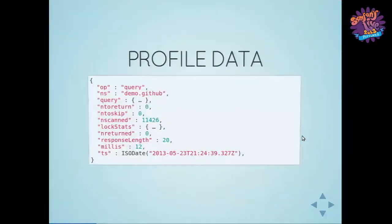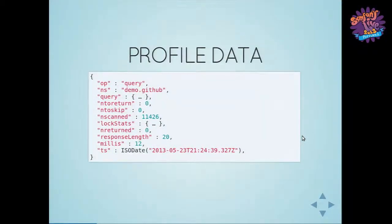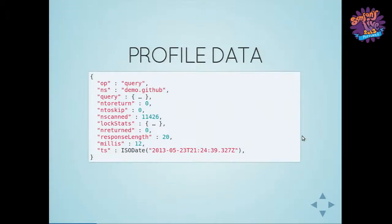An example of what the profiler data looks like: at the top we have the operation — this happens to be a query, but there might also be commands or inserts that get logged. The namespace is the database and collection name that the query happened on. There's a query blob with some Mongo query that was executed, and additionally the various statistics we're going to look at. The most interesting is the milliseconds the query took to run and the time it was executed at.